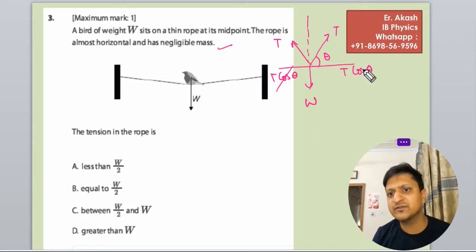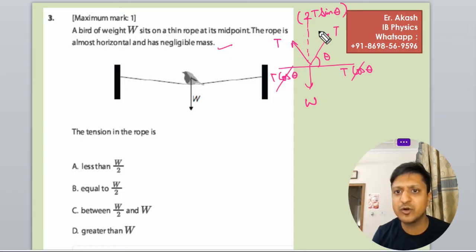The horizontal components will go off and there 2 T sin theta and from there also T sin theta will be there. We will write it as 2 T sin theta because two components are adding each other. We will equalize the vertical component. It will be 2 T sin theta equals to W.